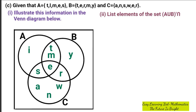Now let's go to question C2, which is asking us to list the elements of the set A union B complement intersection C.